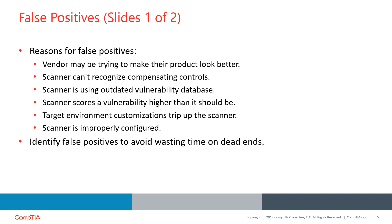Vulnerability scanners are useful tools, but they aren't foolproof. Scanners do sometimes make mistakes for a variety of reasons. When a scanner reports a vulnerability that does not exist, this is known as a false positive error. Reasons for false positives include: the scanner vendor programming the scanner to report more vulnerabilities than there truly are; the scanner being unable to recognize a compensating control; the scanner using a vulnerability database with outdated definitions; the scanner incorrectly scoring a vulnerability as more severe or easily exploited than it actually is; or customizations in the target environment inadvertently triggering the scanner to identify a vulnerability.